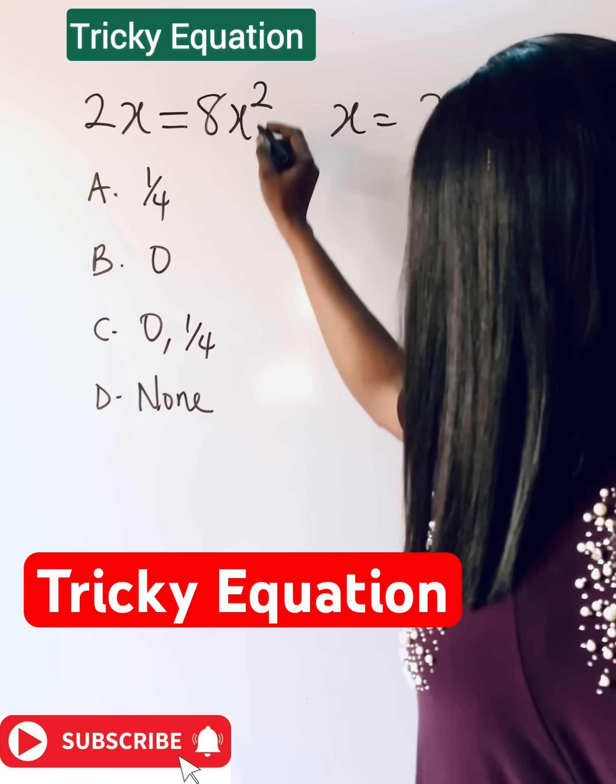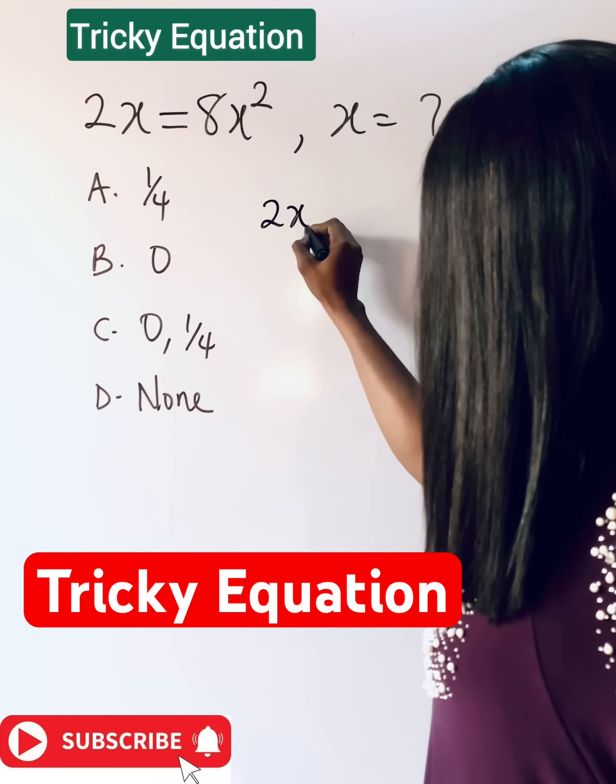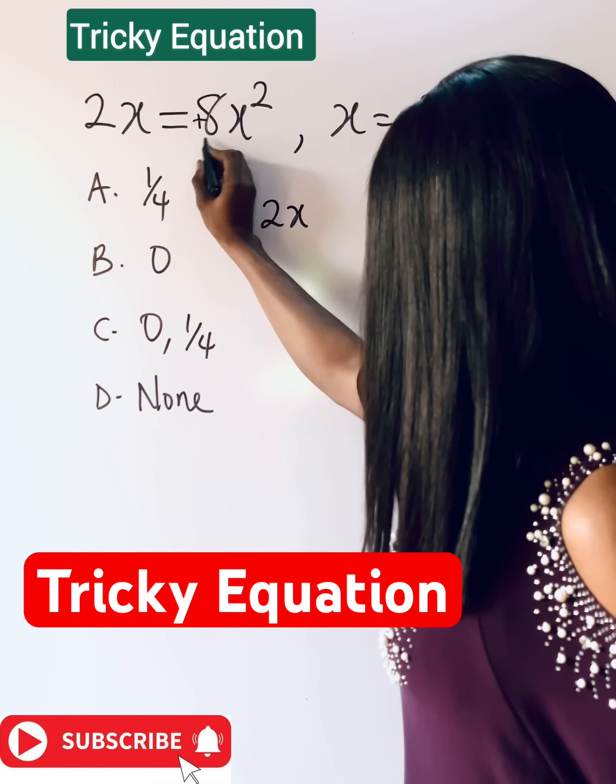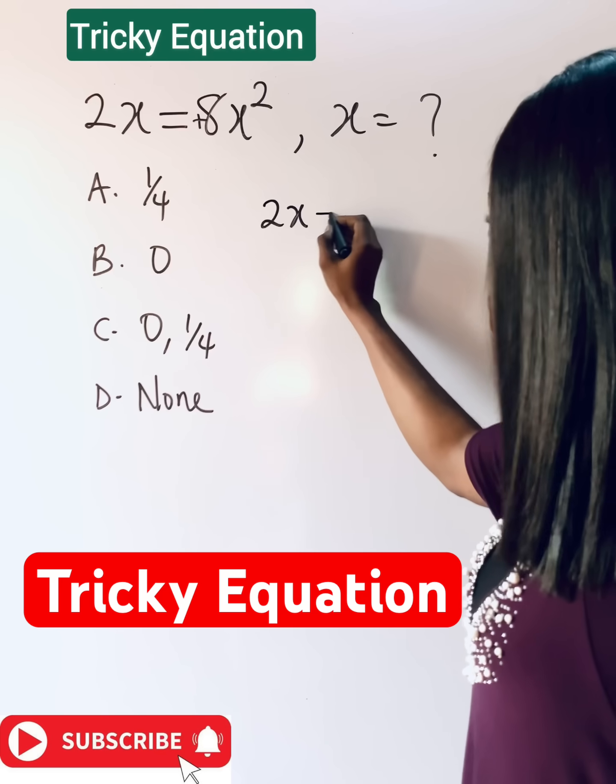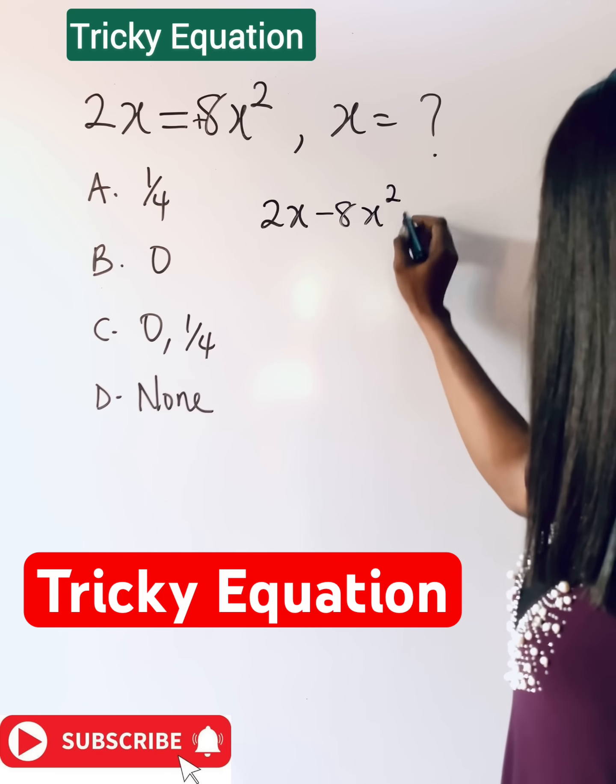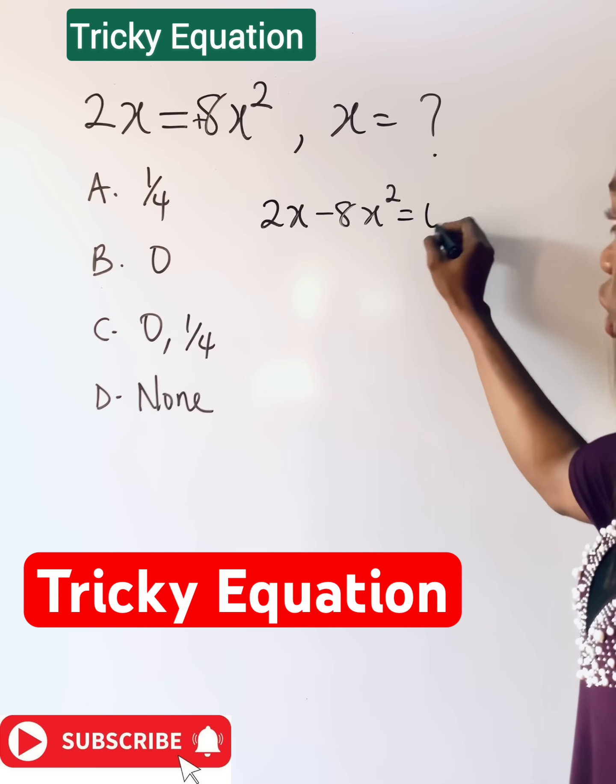So to solve this, we are going to have 2x. Remember, here is positive, so to remove it you subtract. So you have negative 8x squared, and when you have removed it, it becomes 0 left.